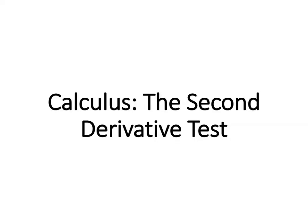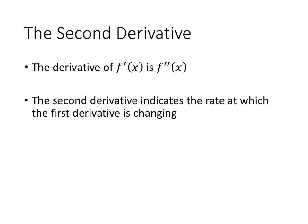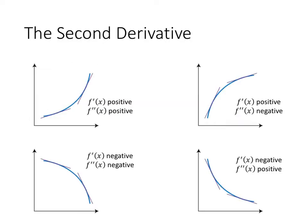In this video, we'll learn about the second derivative and how we can use the second derivative test to find local extreme values for our function. The second derivative of a function is simply the derivative of the first derivative. So f double prime of x is the derivative of the derivative of f, and this indicates the rate at which the first derivative is changing.